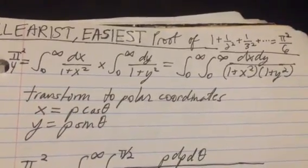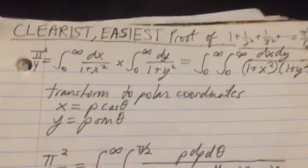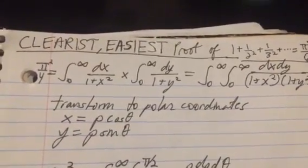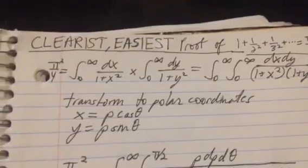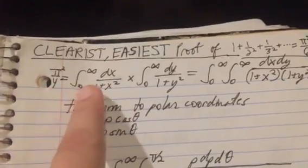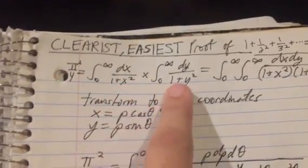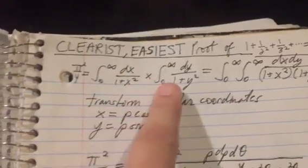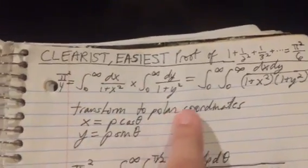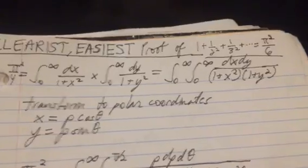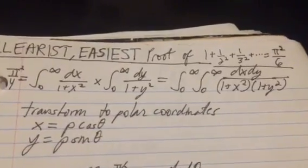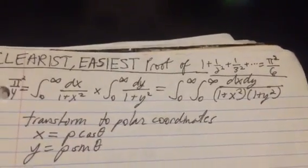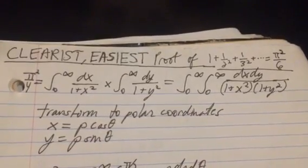So you can try this technique and get some crazier identities. If you know what your integral is equal to, you can change, you know, do the same thing, multiply them together, and then switch to polar coordinates, and get some other neat stuff going.